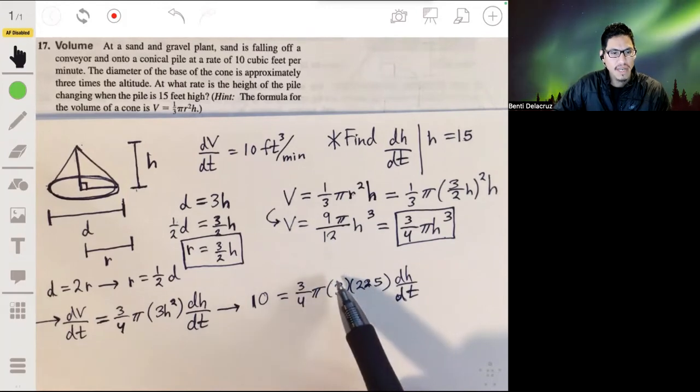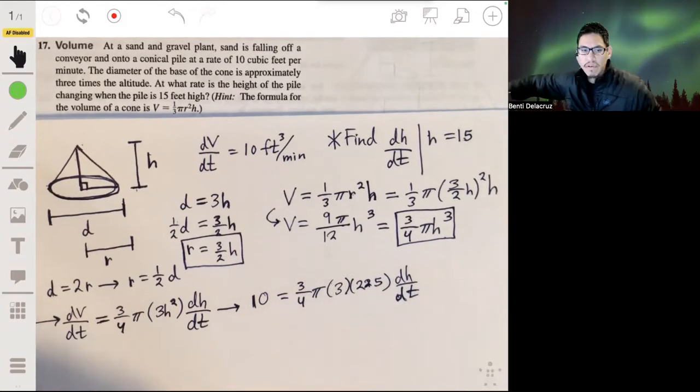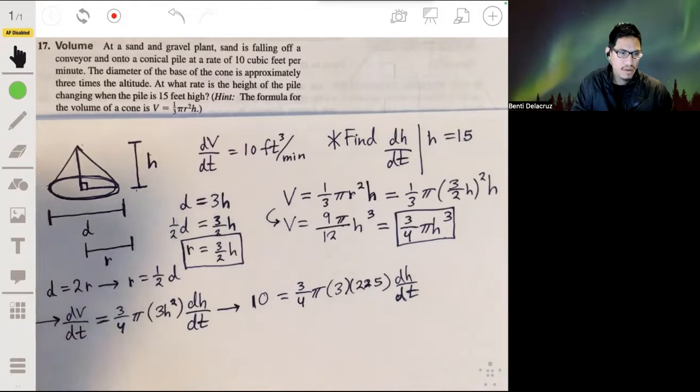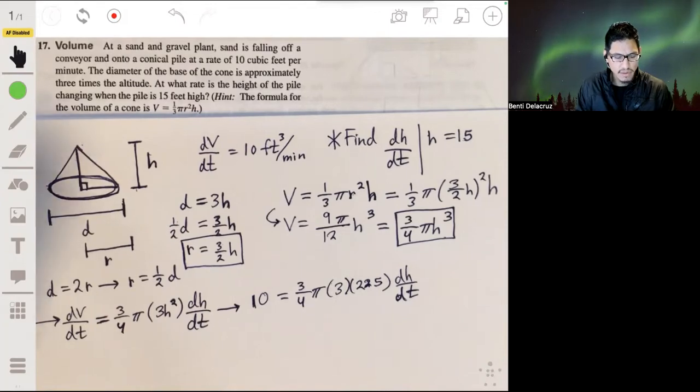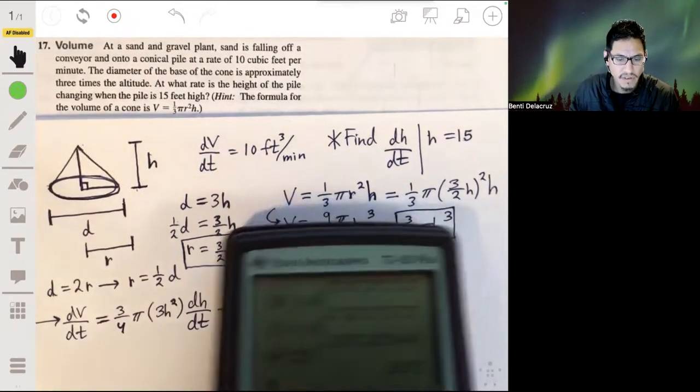So we have nine on top, nine times 225, over four. Let's see, 2025.